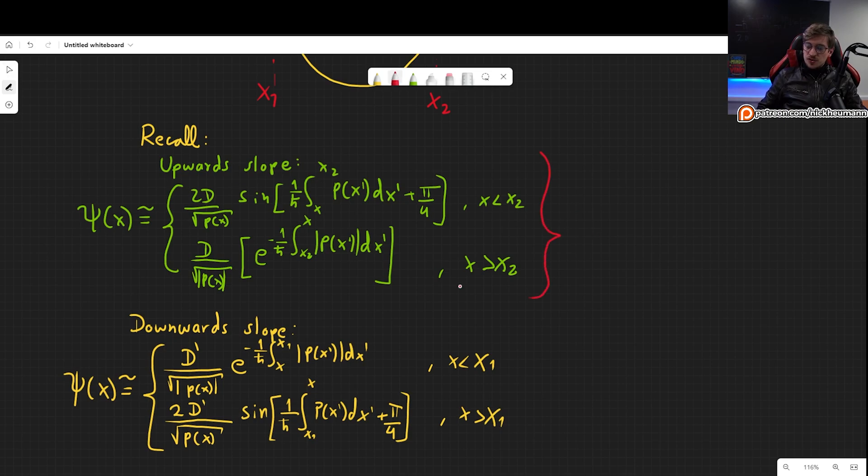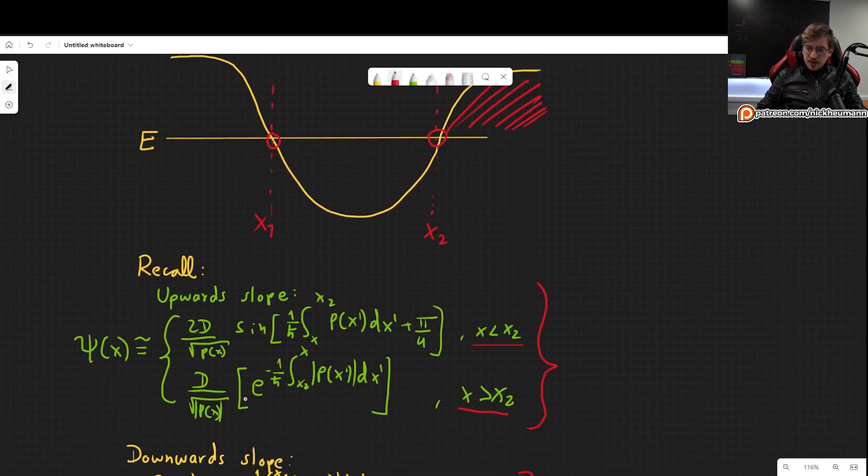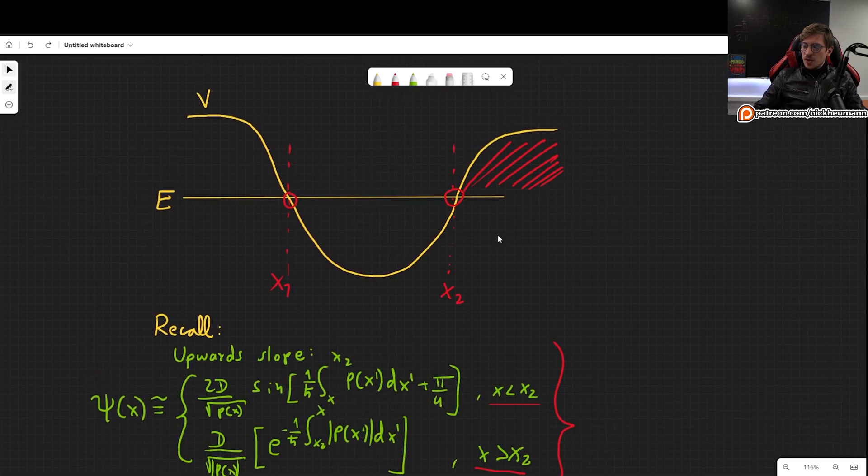This is the case for an upwards slope and this is the case for a downward slope. Notice that this expression with the sine is valid if x is smaller than the turning point that is going upwards and this other expression is valid for the region where x is greater. This is the upward slope. In the region where we are greater than x2, which is our turning point, our wave function looks like this exponential. And to the left, on this side, we are in the x smaller than x2 situation, so our wave function looks like this sine right there.